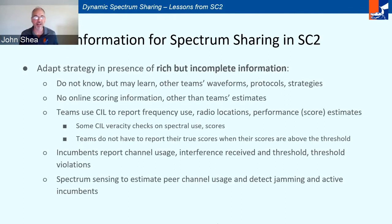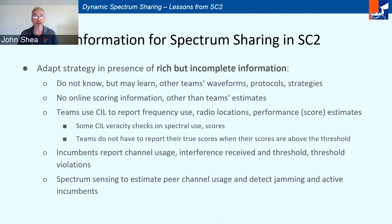Spectrum sharing in the SC2 is based on a very rich set of information, but the information is also very incomplete. DARPA prohibited teams from disclosing any information about their signaling protocols or strategies — there was a complete ban on talking to other teams about that. Teams don't have any online information about how they or other teams are doing other than estimates they generate themselves. Teams use the SIL to exchange information about frequency usage, radio locations, and incumbents' usage information. You can also sense the spectrum to determine how it's being used, but the information is not necessarily accurate or truthful in all cases.